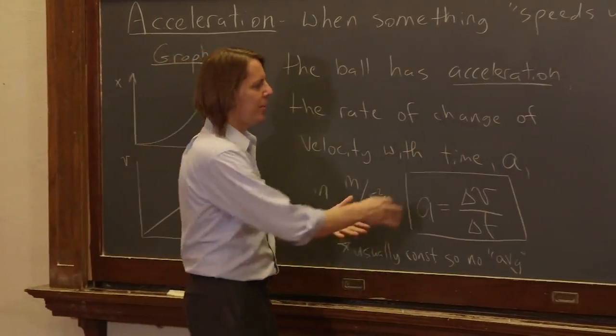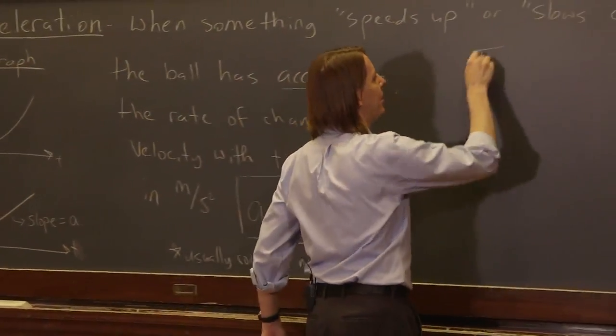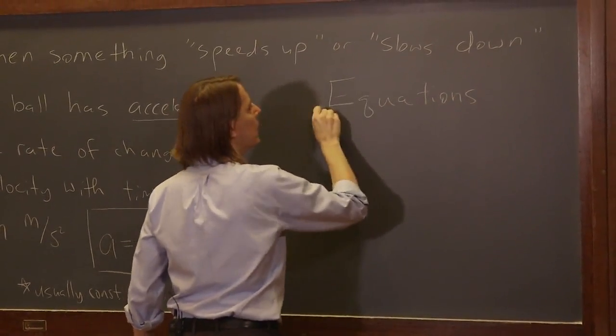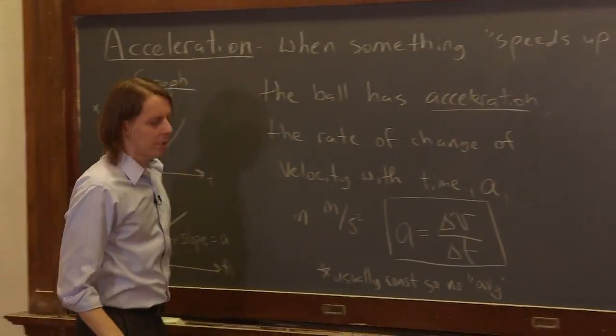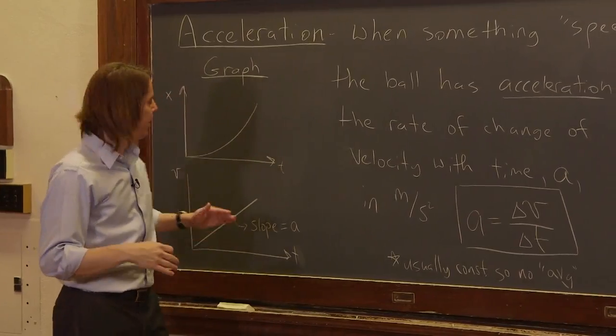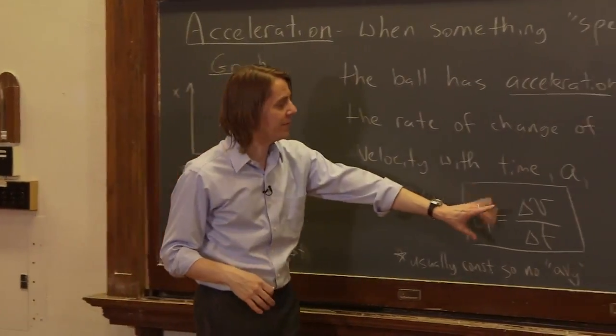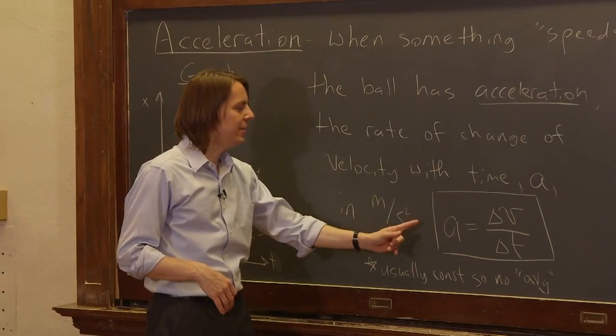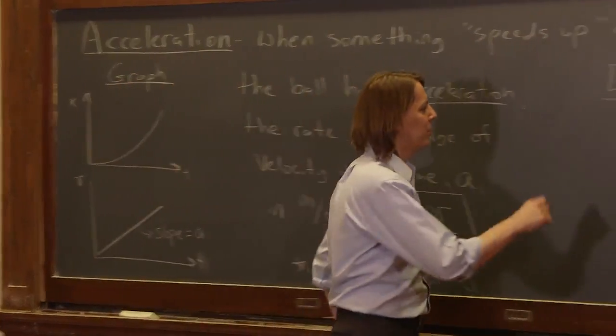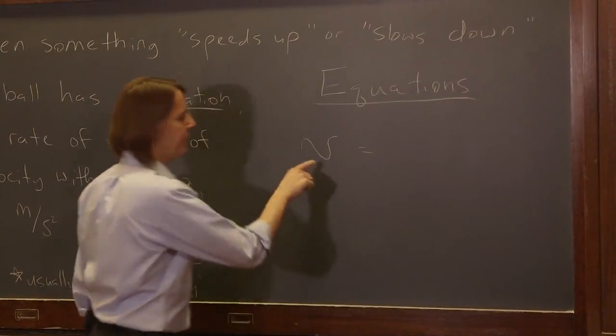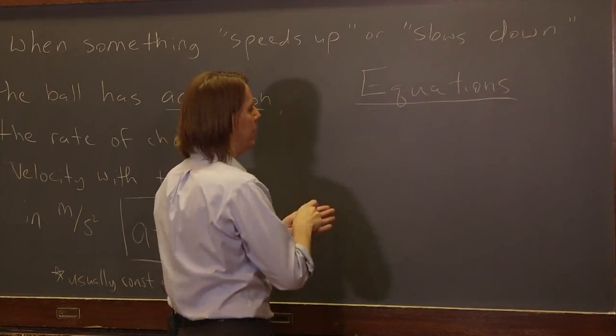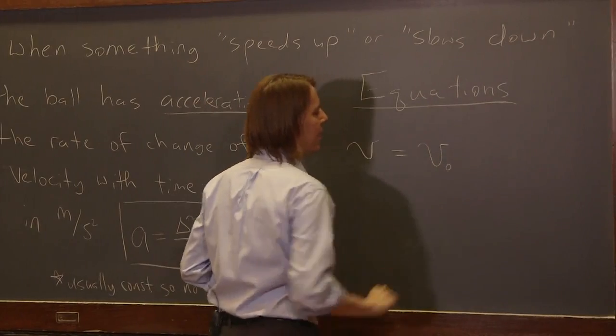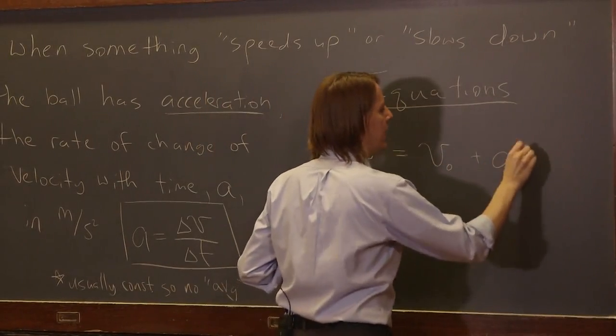So let's look at some other equations that you want to be able to think about, get used to, practice with acceleration. One is, how does the velocity change in time? So it's really related to this. If we say delta V is V minus V naught, and we bring delta T over here, well, we find similar to what we saw before, that the velocity is a function of time. Velocity as a function of time equals V naught plus A T.